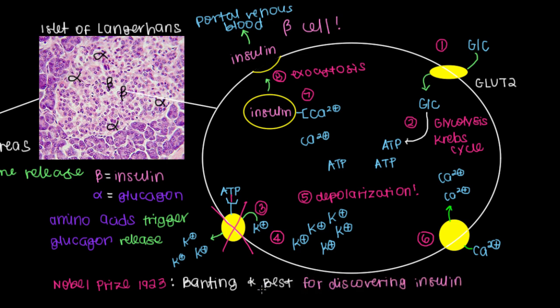And the crazy thing about that is that Charles Best, who shares in the Nobel Prize, was a medical student the time the study was done in 1921. And then two years later, he was able to share the Nobel Prize with his professor, which is just mind-boggling to think about.